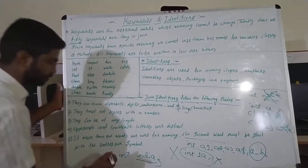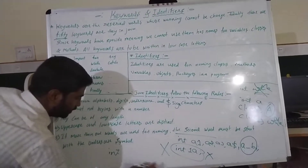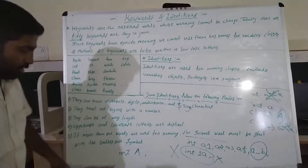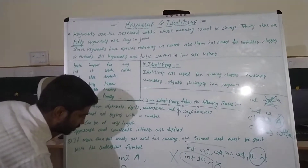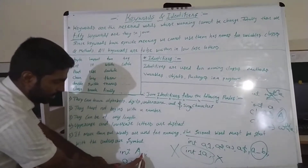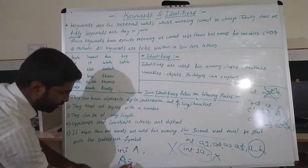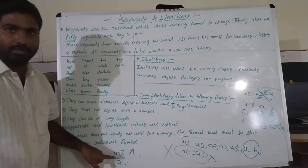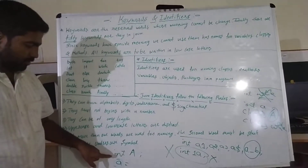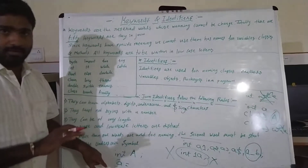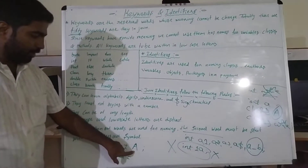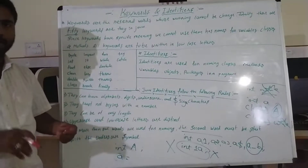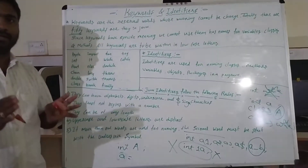Rule four: uppercase and lowercase letters are distinct. For example, 'Program' with a capital P is different from 'program' with a lowercase p. Using the wrong case makes the identifier invalid.